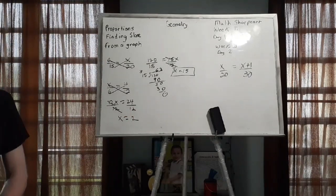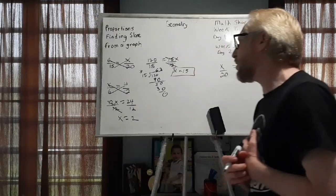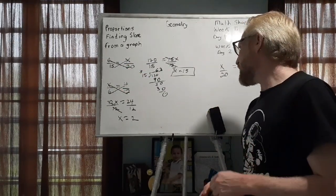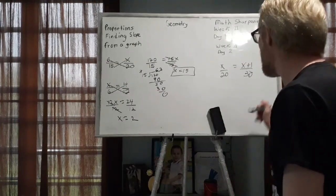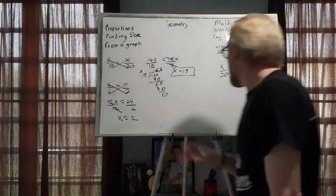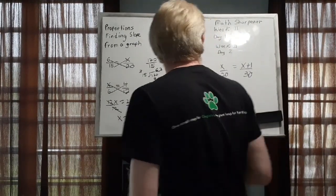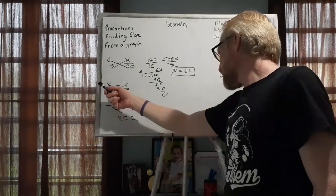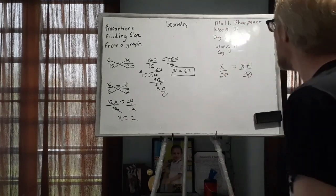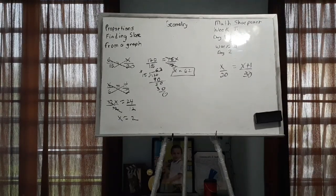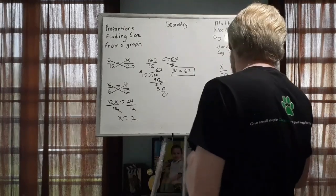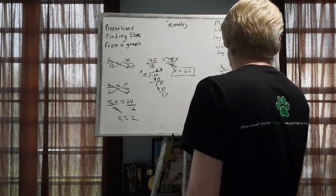To recap: for the first proportion, 6 times 20 is 120 and 15 times x is 15x. Dividing both sides by 15 gives x equals 8. For the second proportion, cross multiplying gives 12x equals 24, and dividing by 12 gives x equals 2. Now the last proportion has variables and can look a little tricky. You're going to cross multiply the same way: x times 30 is 30x.